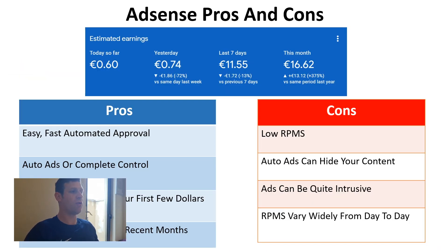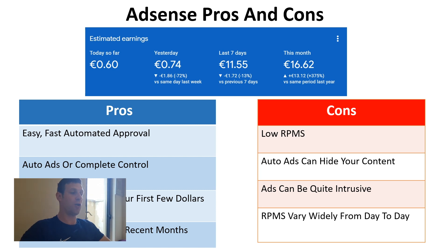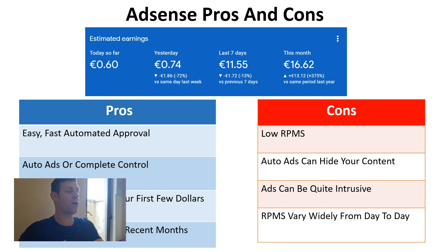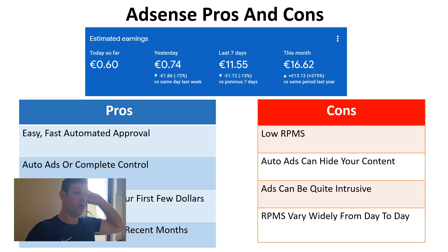The pros of AdSense: it's fast, easy, and has automated approval — the system accepts you automatically. You can hit the auto ads button once you add the AdSense code to your website and it works with artificial intelligence to get the best ad placements. You can also manage placements yourself, but that's a lot more work, which is why I prefer auto ads. Overall, AdSense is an excellent way to earn your first few dollars from a blog, even with just five or ten visitors a day.